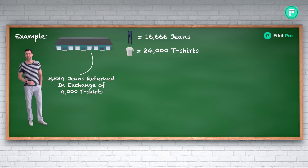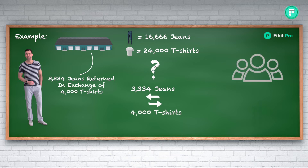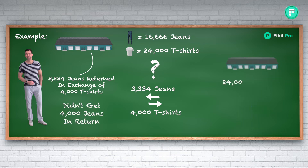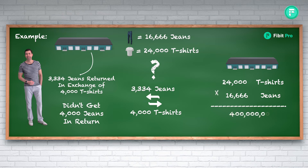If you are confused why only 3,334 jeans are given in exchange for 4,000 t-shirts — as more jeans are bought they become more expensive, which is why the t-shirt maker didn't get exactly the same amount back. Now there are 24,000 t-shirts and 16,666 jeans in the godown, and 16,666 times 24,000 equals 400 million, which confirms the constant is maintained and the godown is still balanced.